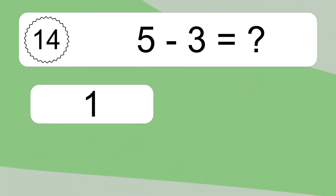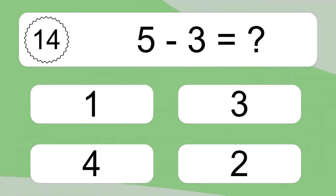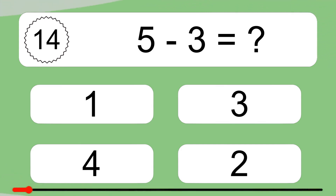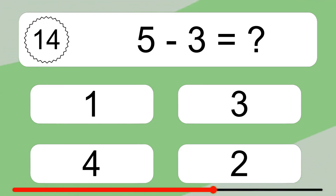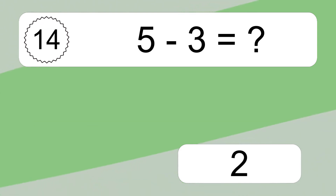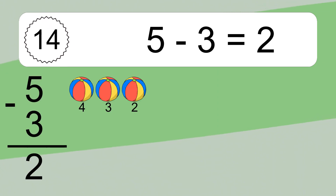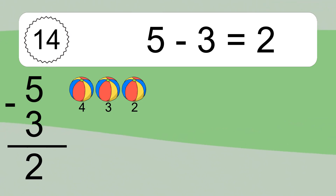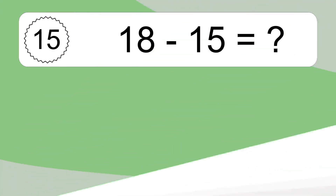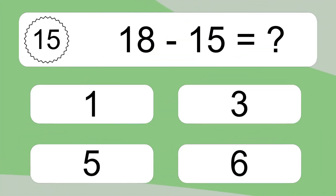5 minus 3 equals what? 5 minus 3 equals 2. Let's count it: 4, 3, 2. 18 minus 15 equals what?